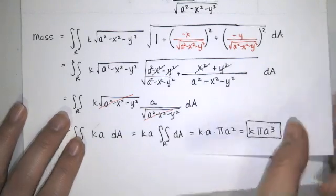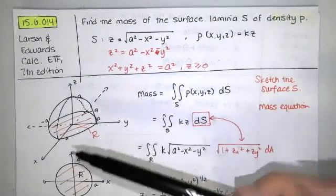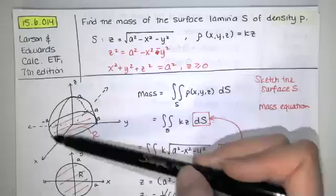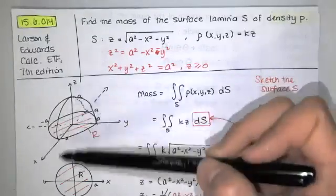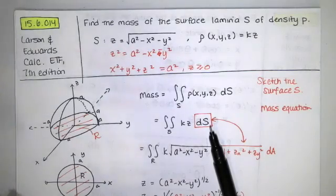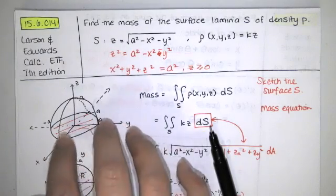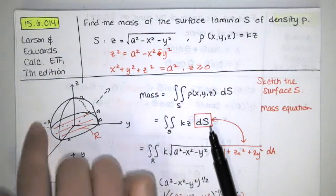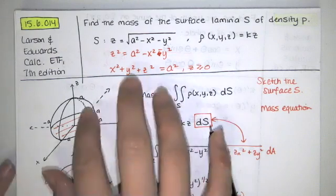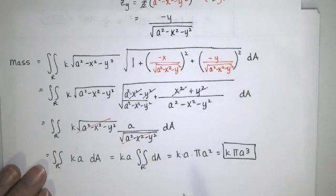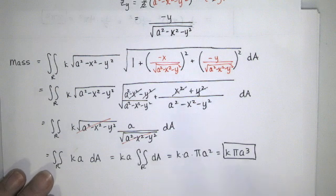And that is the mass of this surface lamina — the top half of a sphere, not a solid volume, just a surface. It's like taking the leather cap off the top of a basketball, where the density depends on the z-value, increasing as z increases and nearly zero at the bottom. The mass is the integral of density times surface area, equal to k·π·a³.